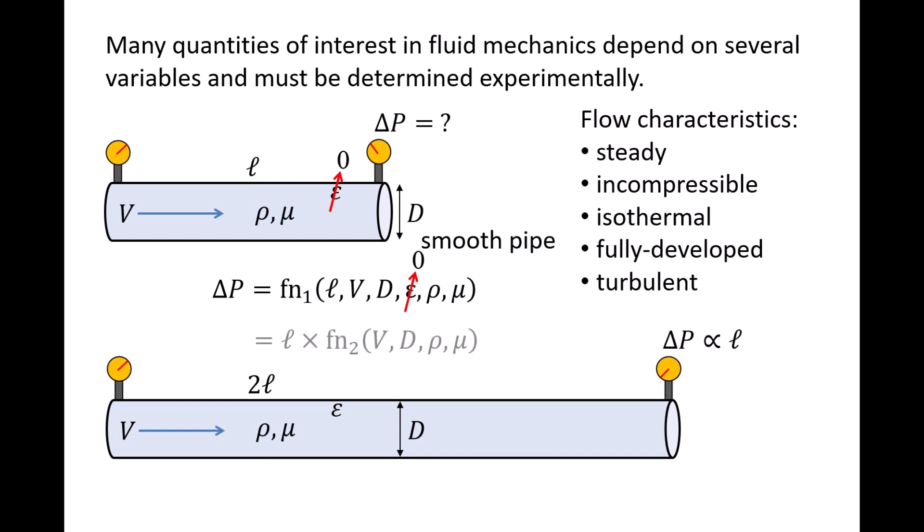Since we now know the relationship between the length of pipe and the pressure drop, we have delta p equals l times some unknown function of v, d, rho, and mu, and we'll call this function fn2.